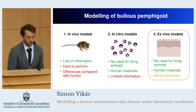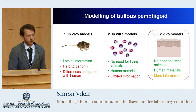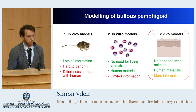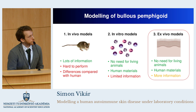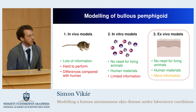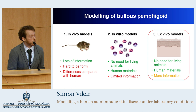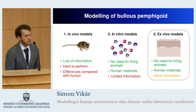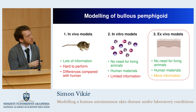The third possibilities are the so-called ex vivo models. Here, we use not just separated cells but also whole tissues — in our case, skin tissue. It's also true that we don't need to work with living animals, and we can use only human materials, which makes the human relevance much more clear. The informational content of these systems is higher than in vitro models, as we have many different cell types and intercellular connections as well.